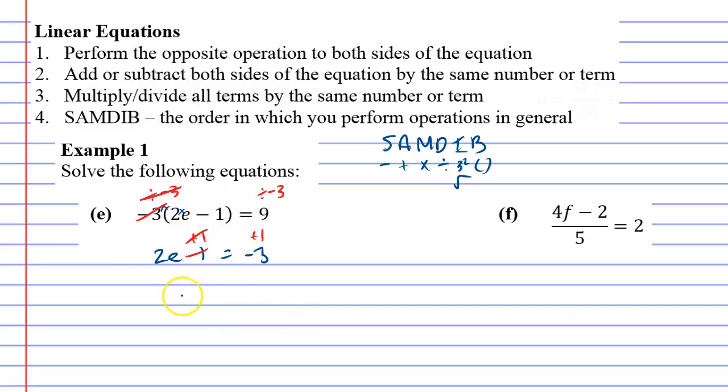This leaves us with two e equals negative three plus one, which is negative two, remembering that's times two. The opposite of times two is dividing by two. Divide two, divide two, giving our final answer, which is negative one. Let's look at question F.